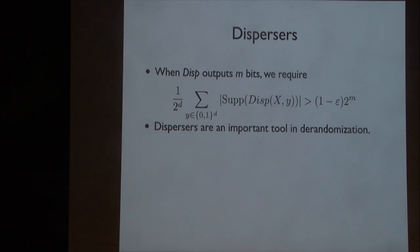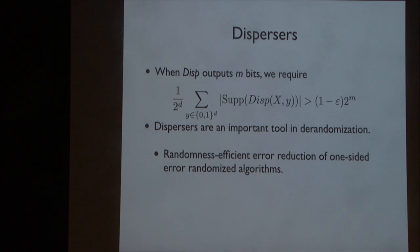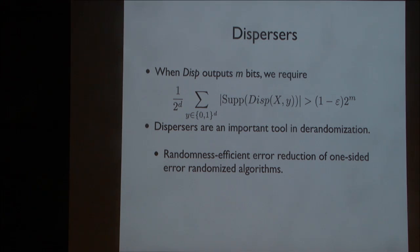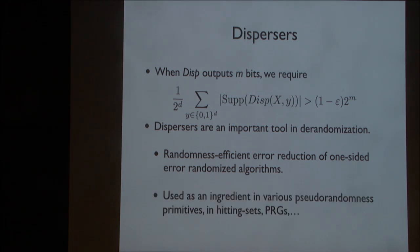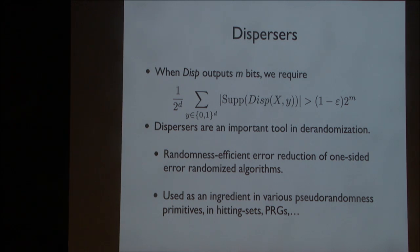Dispersers are important in de-randomization. The classical application is for error reduction of one-sided error randomized algorithms in a very randomness-efficient manner. They're also used as an ingredient in various pseudo-randomness objects: in hitting sets, in PRGs, et cetera.